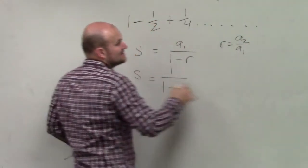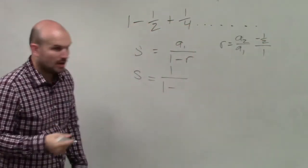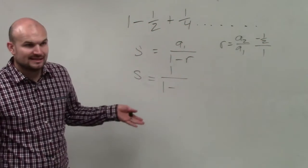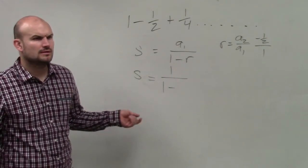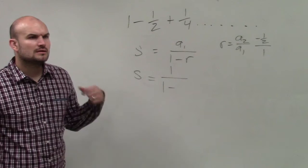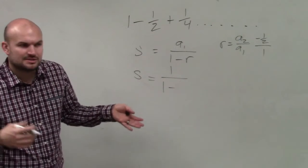So in this case, I have a negative 1 half divided by 1. Well, anything divided by 1, the negative 1 half divided by 1 is just going to be negative 1 half.